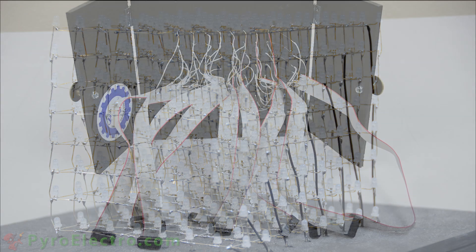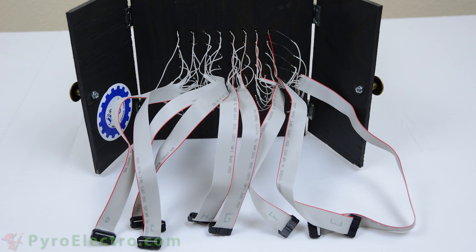8 cable connections are used to access each of the 64 anodes of the LED on a specific layer. A 9th connector on the far right in this photo allows for selecting which cathode or layer is currently active.